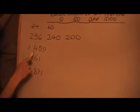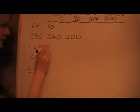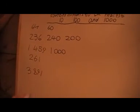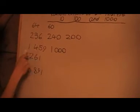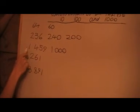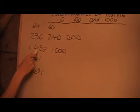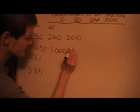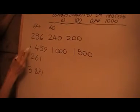Now to round 1459 to the nearest thousand, look at the hundreds digit — that's a four, so round it down to 1000. To round it to the nearest hundred, look at the tens digit, which is a five, so round it up to 1500.